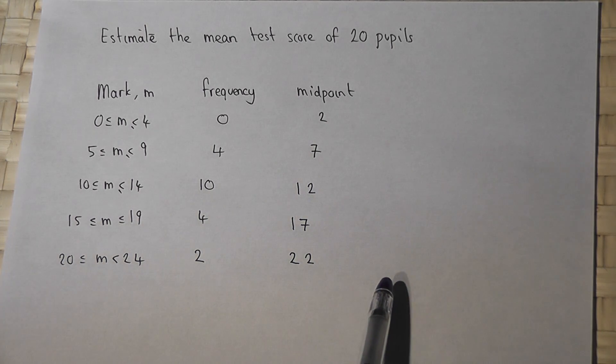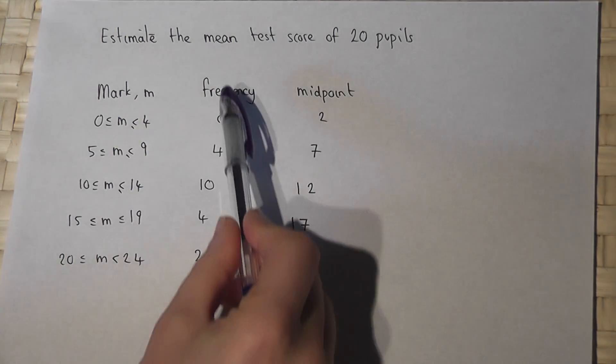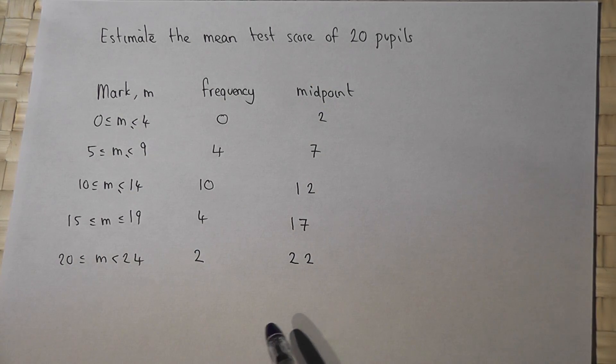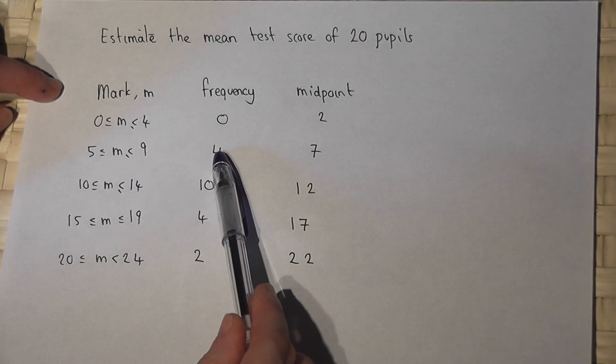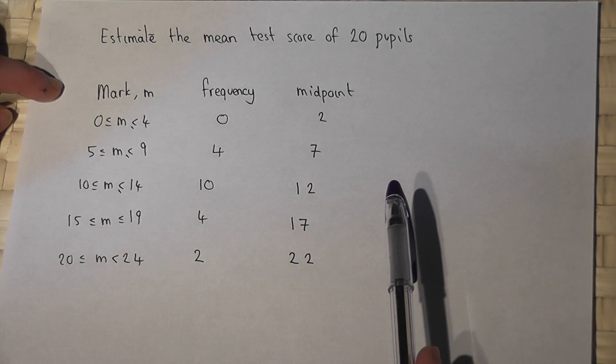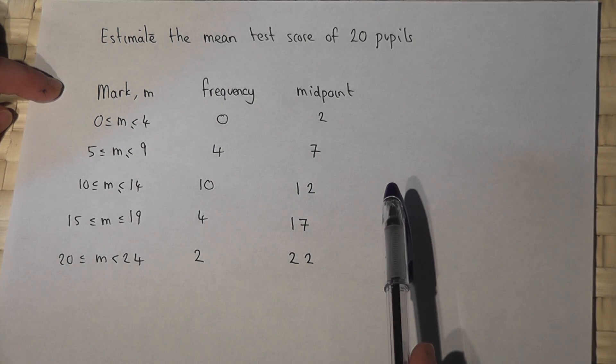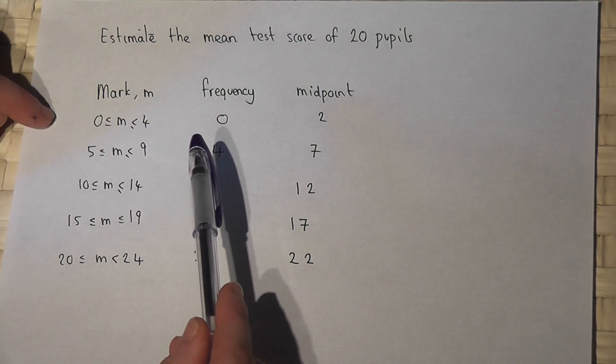This video reviews how to estimate the mean from a grouped frequency table. In this table, for example, four people had a score between five and nine, so we have to fix a value for this five to nine because that's just an approximate spread of values.